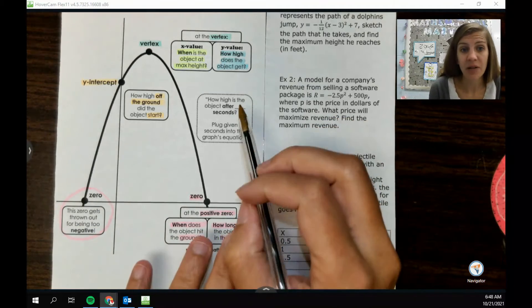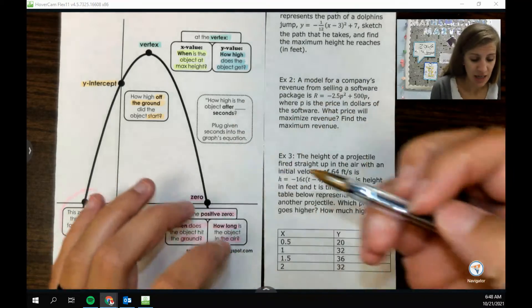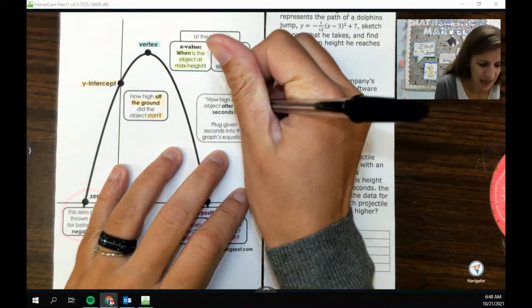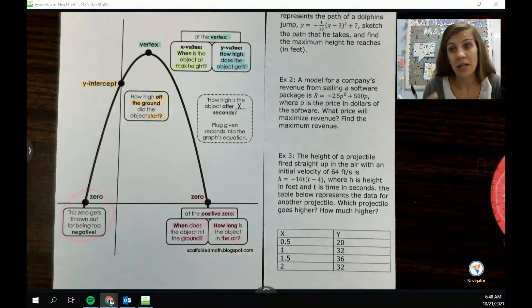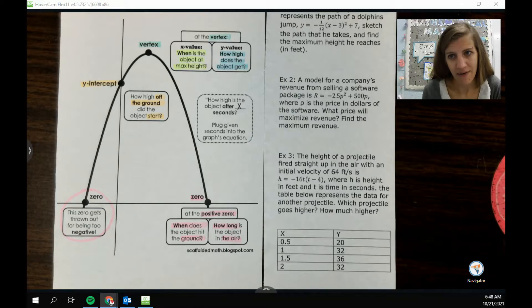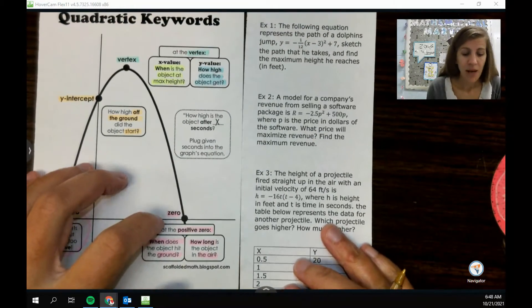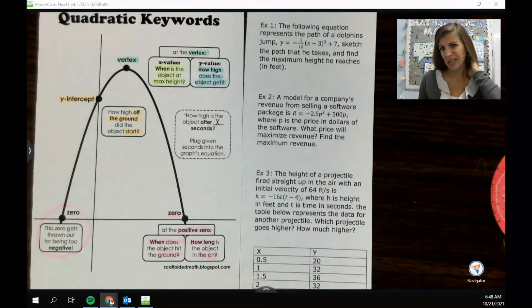It could also be that they just generally ask you, like how high is the object in the air after like x seconds. So in that case they're giving you an x value to plug into your equation to find the y value.